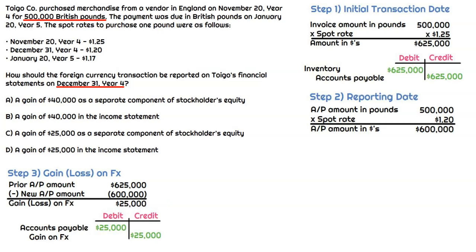For the journal entry at the reporting date, we need to reduce the accounts payable balance down to $600,000. We do that by debiting accounts payable for $25,000, and then we record the gain on foreign exchange with a credit to gain on FX for the same amount of $25,000.